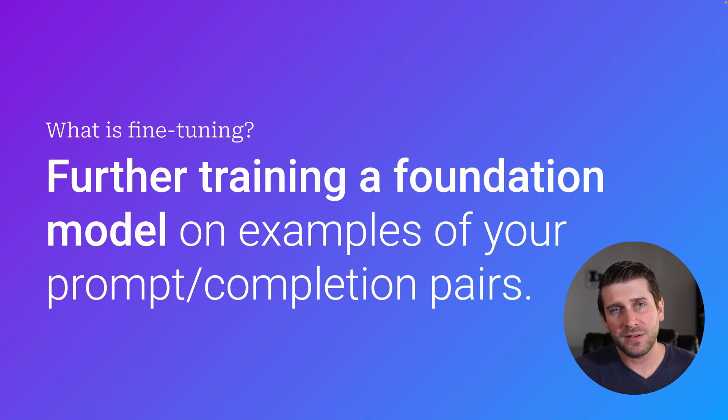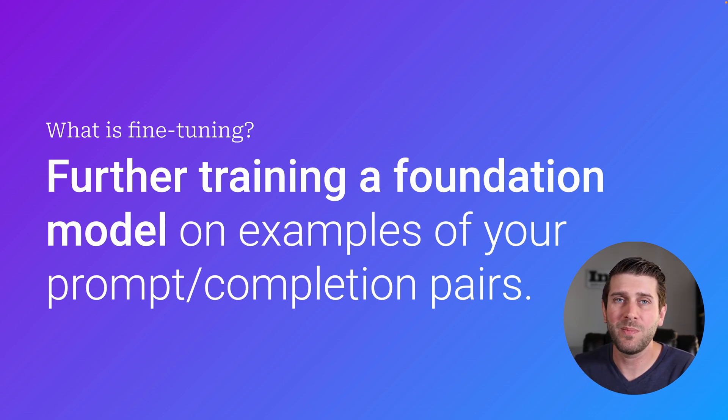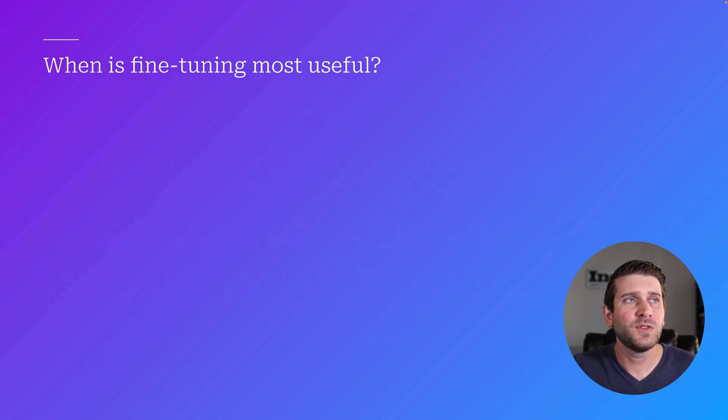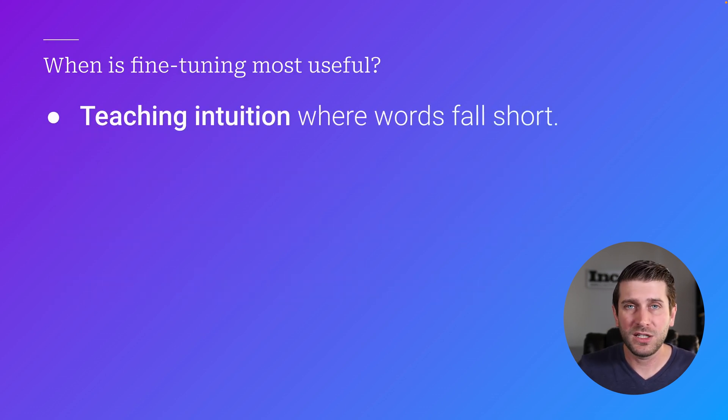Prompt completion pairs are what you're giving the model in the prompt, and then what is a good response back — this is what I would want the model to give me, given this input. Fine-tuning is really useful when you're trying to teach intuition where words fall short. Imagine you're a really good writer who can get into a flow state and write amazing content, but someone asks you: what are the 50 techniques you use to become a good writer? That might be a hard question to answer.